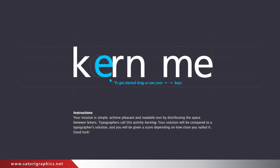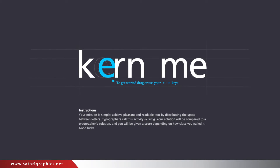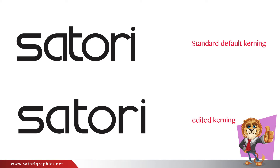When you type using a default font, take a look at the kerning — i.e., the space between each letter. Default kerning settings often need tweaking to be more legible and to look more appealing. You can see the difference between the default settings and after when I've edited the kerning.